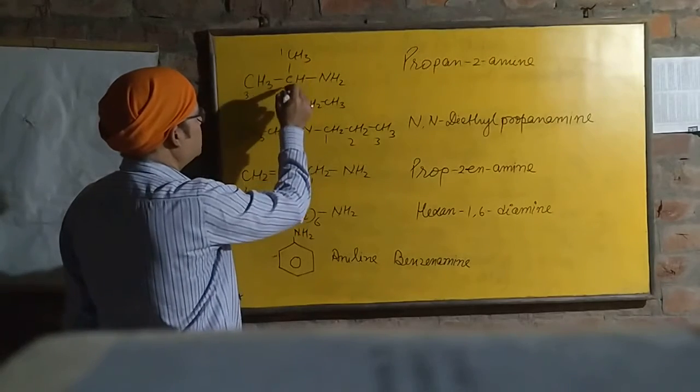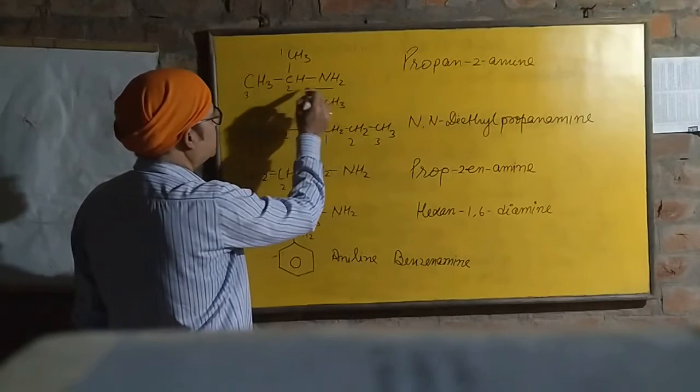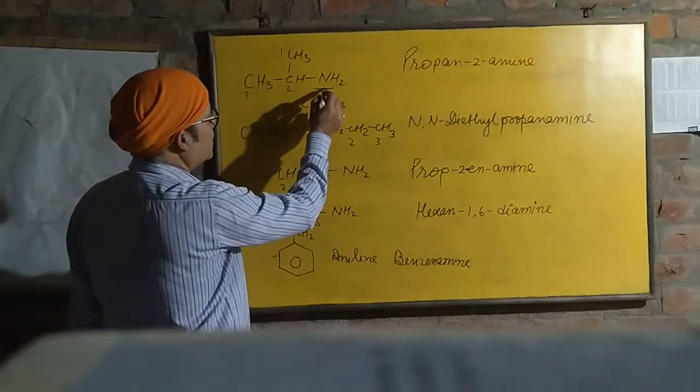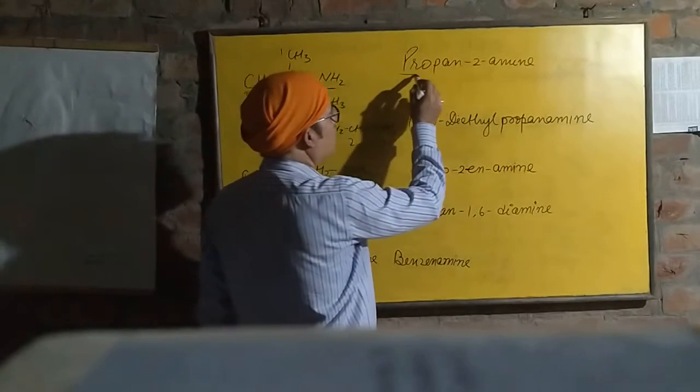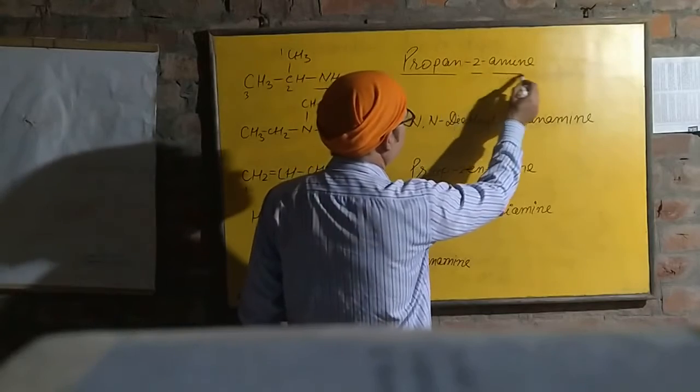You see here, three carbon chain: one, two, three. And at the second carbon, there is amine. Therefore its name is propane-2-amine.